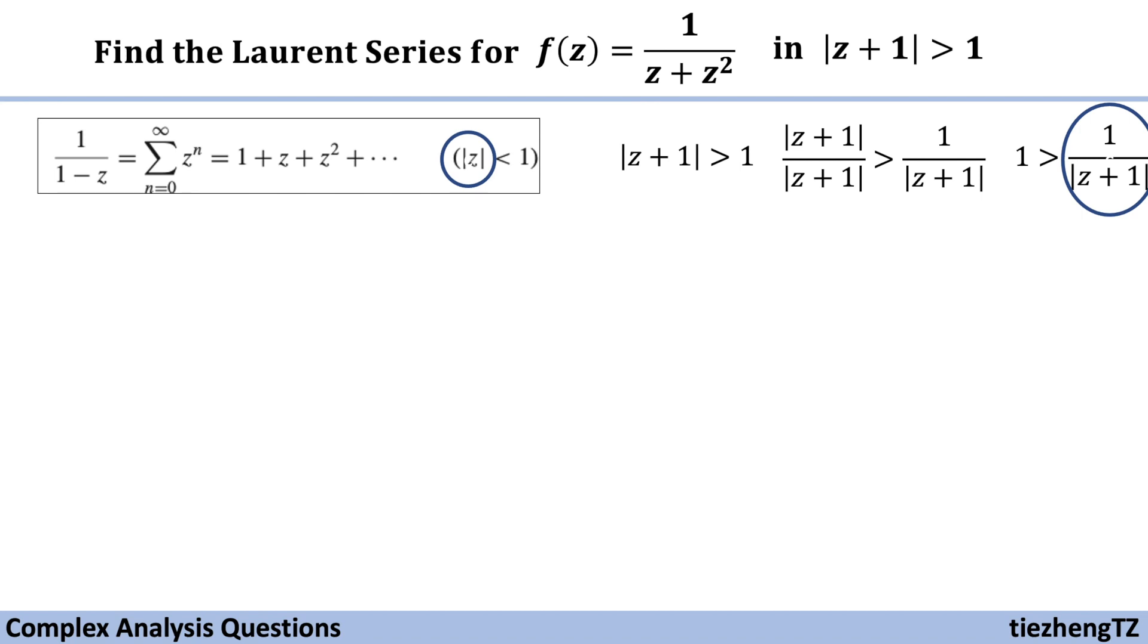So we have 1 over z plus 1 modulus less than 1. So now we have such form which is less than 1, so we can substitute. And next, let's do something with the given equation.